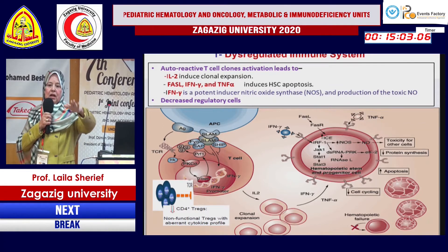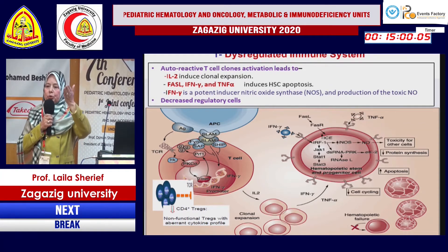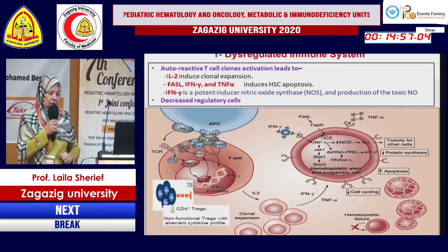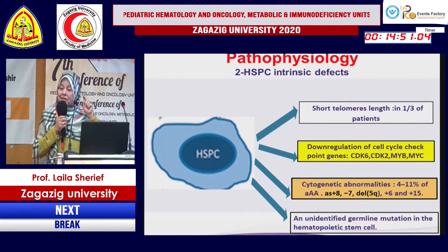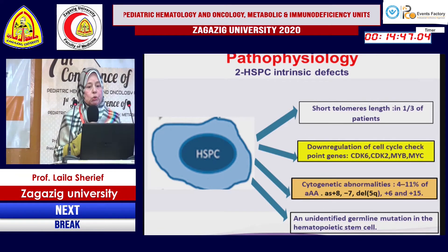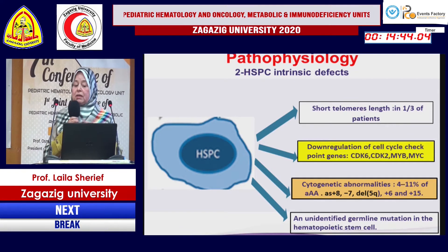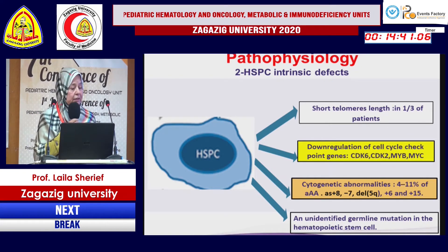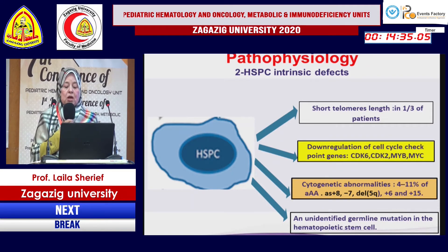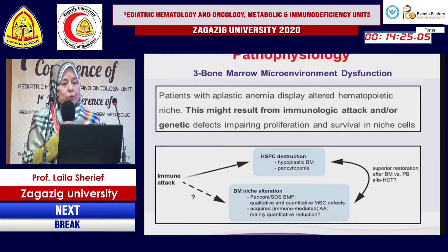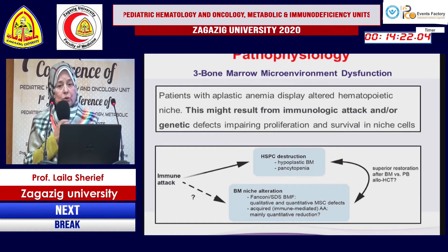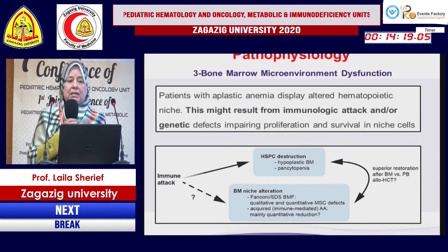One very important abnormality is decreased T-regulatory cells. The T-regulatory cell is important for self-tolerance and regulates T-cell activity. If decreased, the autoreactive abnormal reaction continues, leading to bone marrow failure. In addition, the hematopoietic stem cell itself has intrinsic abnormalities, including shortened telomeres, downregulation of cell cycle checkpoints like cyclin-dependent kinase 2, cytogenetic abnormalities present in about 11% of cases, and germline abnormalities detected by next-generation sequencing.